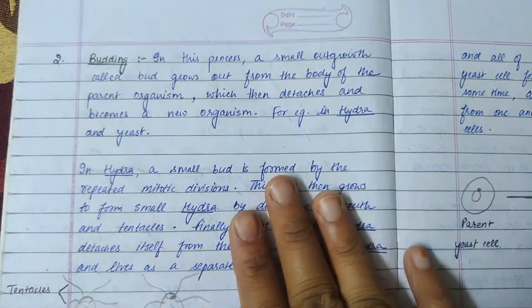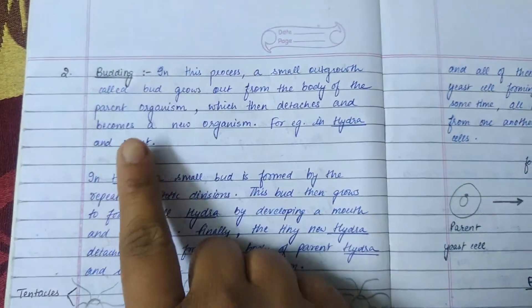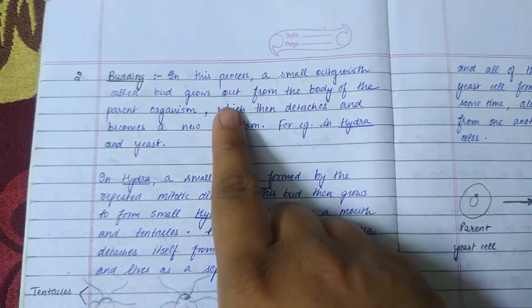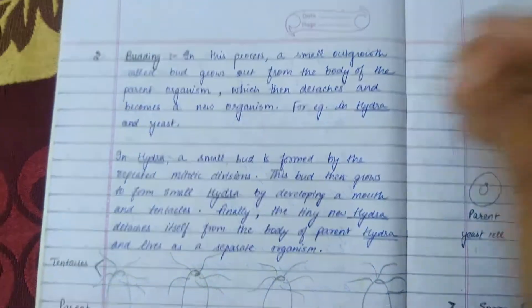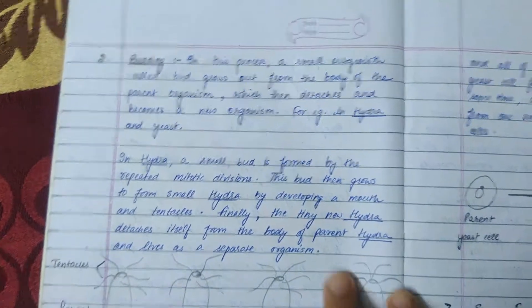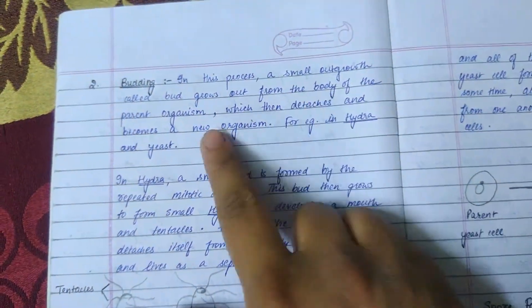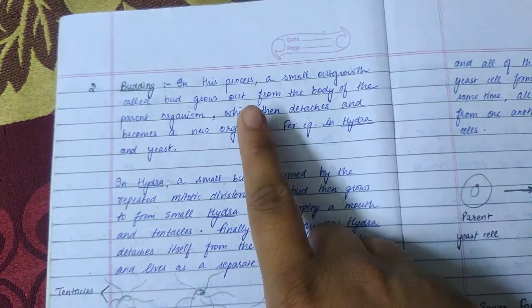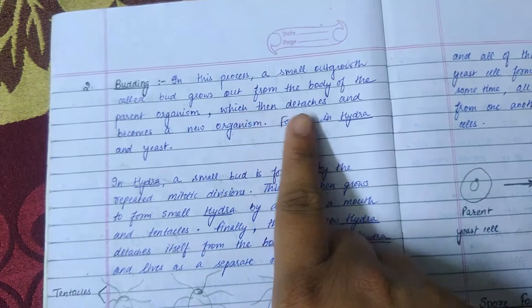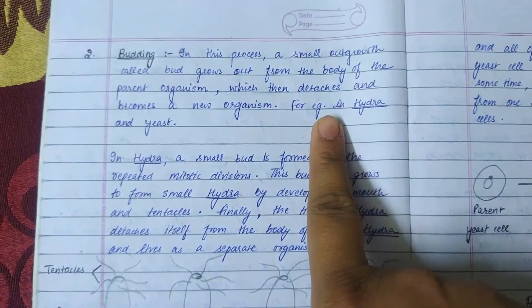The second method of asexual reproduction is budding. In budding, a small outgrowth called a bud grows from the parent organism, which then detaches and becomes a new organism. Examples include hydra and yeast.